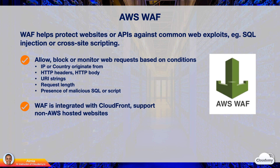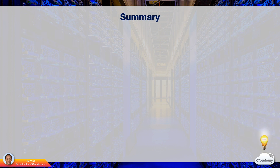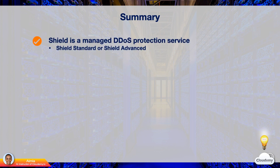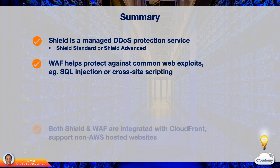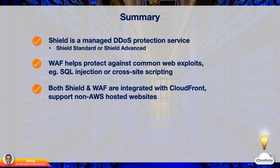AWS WAF is integrated with Amazon CloudFront, which supports custom origins outside of AWS. In this episode, we've learned about AWS Shield and AWS WAF. AWS Shield is a managed DDoS protection service — it comes with Shield Standard and Shield Advanced. By default, all AWS customers benefit from Shield Standard, which is free to use. AWS WAF helps protect websites or APIs against common web exploits such as SQL injection or cross-site scripting. Both AWS Shield and WAF are integrated with CloudFront and support non-AWS-hosted websites.